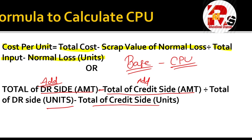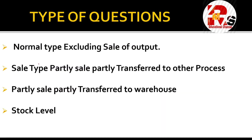The formula is: Total Cost minus Scrap Value of Normal Loss, divided by Total Input minus Normal Loss Units. The denominator is also called Expected Output. Students who watch all seven videos in this crash course carefully will face no problems in process costing and can score 20 out of 20 marks.